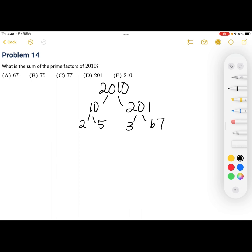So we're finding the sum of the prime factors, and these are the prime factors. So what we can do is put addition signs between all these. Two plus five plus three is 10. And then plus 67, which is 77. And our answer is C.